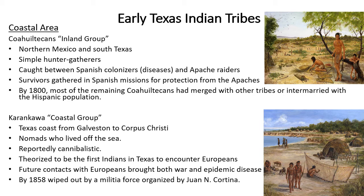The first area we will study is the coastal area, with the first tribe being the Coahuiltecans, also known as the Inland group people. They lived in what is known today as Northern Mexico and South Texas. They were simple hunter-gatherers whose principal food supply was agave plants, but they also lived off cactus fruit, rabbits, rodents, reptiles, birds, bugs, deer, javelina, antelope, and some bison. Besides the agave, no food supply was reliable enough to fully support the Coahuiltecans; life was a constant struggle for survival. They were also caught between Spanish colonizers and their diseases and the Apache raiders, causing the population to go into steep decline during the early Spanish colonial period. Eventually, survivors gathered in Spanish missions for protection, mainly from the Apaches. By 1800, most of the remaining Coahuiltecans had merged with other tribes or had intermarried with the Hispanic population.